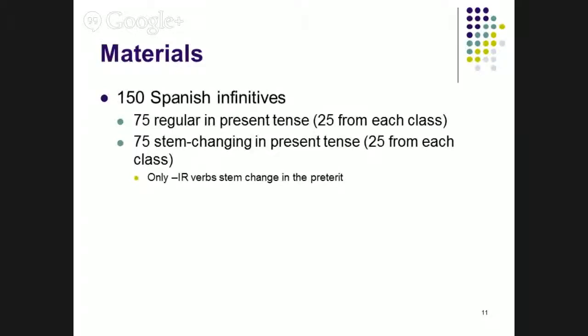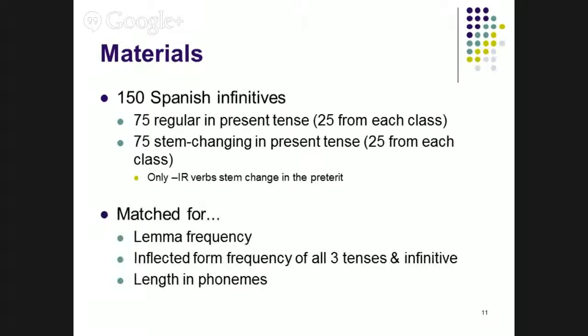And then they did 150 experimental items that worked just like those last five practice items. What are the 150 items? 150 Spanish infinitives, 75 regular in the present tense, and 75 stem changing in the present tense. The same verbs were used in the preterite, but that means only 25 of them are regular in the preterite. The IR verbs also stem change, sometimes a different stem change in the preterite. Verbs were matched for lemma frequency, inflected form frequency of all three tenses and the infinitive and length in phonemes. All things that can influence reaction times apart from what I want to be looking at.